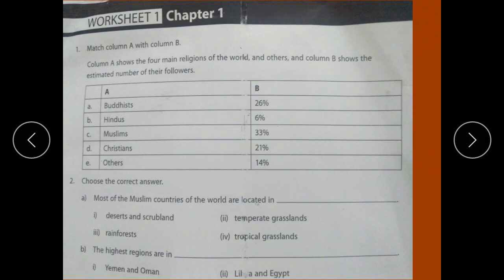This is an activity and you have to do it by yourself. Next one is the worksheet: Match column A with column B. Column A shows the 4 main religions of the world and others. Column B shows the estimated number of their followers. You have to match each religion with its estimated percentage of followers. Page number 1 of your chapter number 1 will be helpful for you.